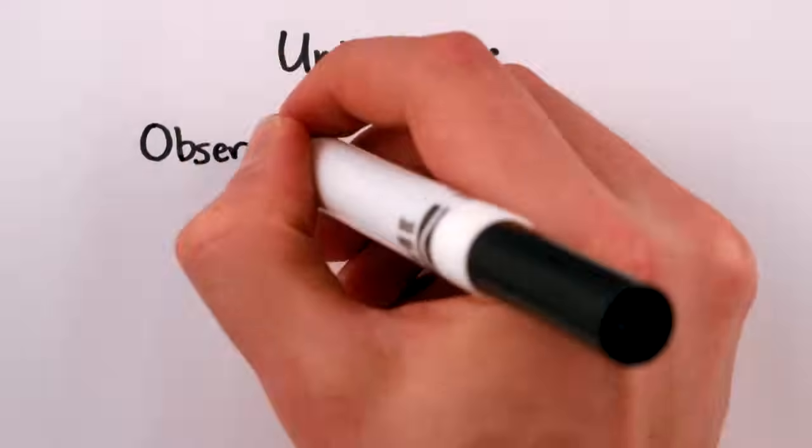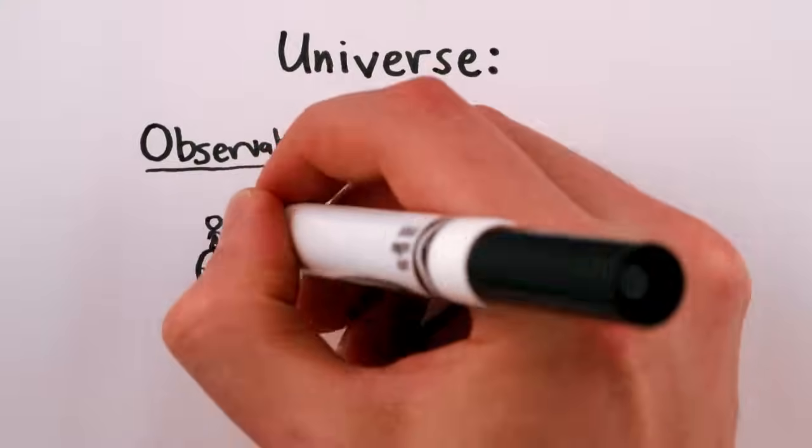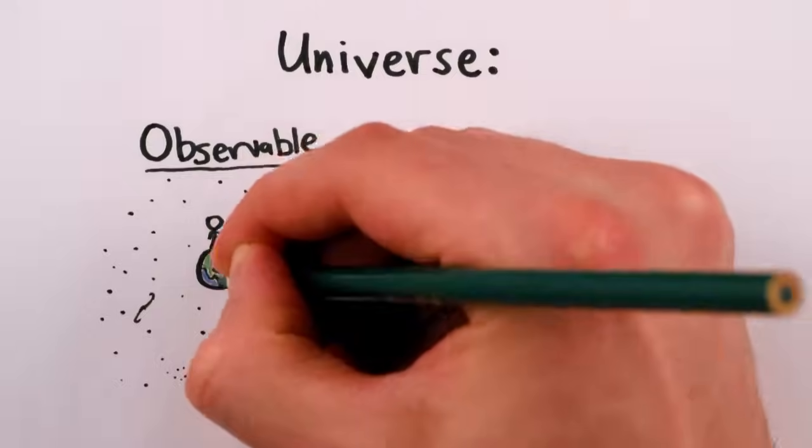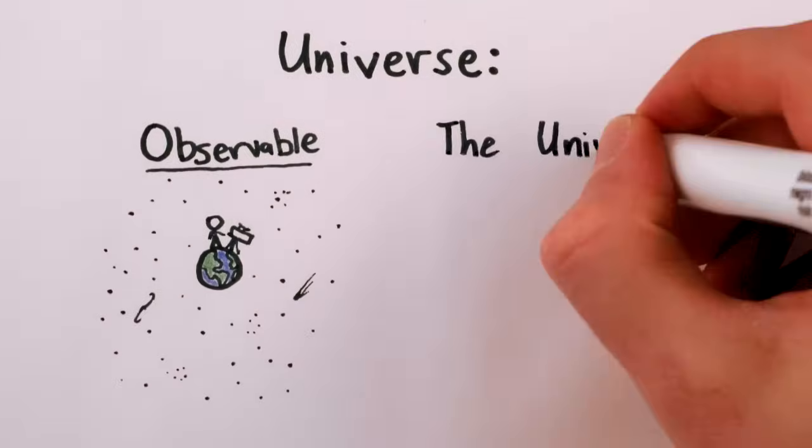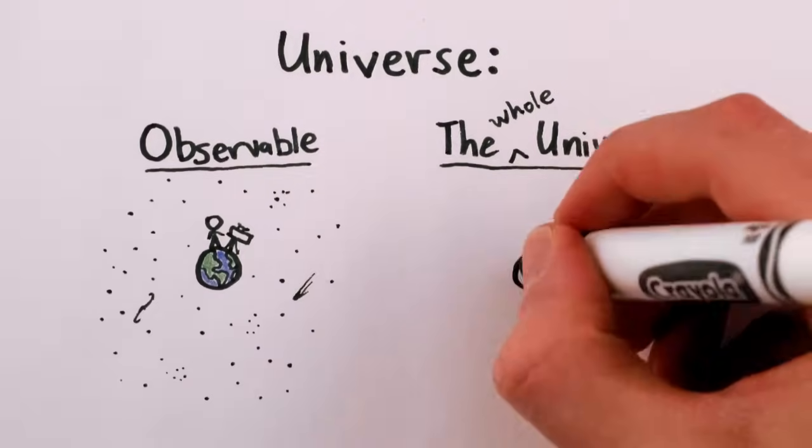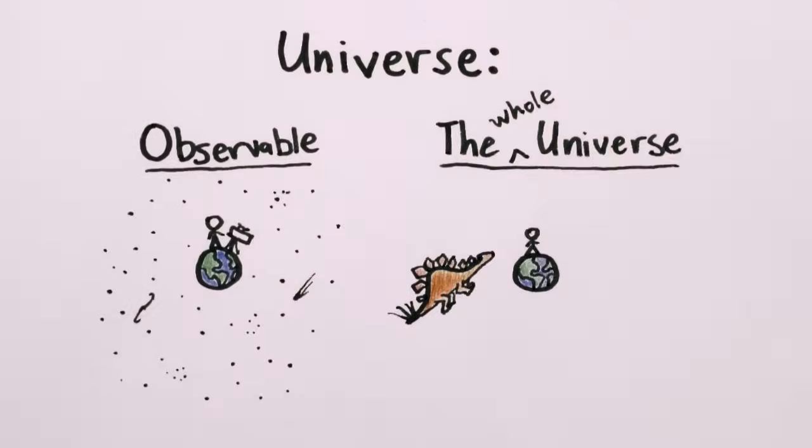Well, we know that there are two different meanings for universe. First, the observable universe is everything that we've been able to see or observe thus far. And second, the universe, or the whole universe, means everything that exists or has existed or will exist.